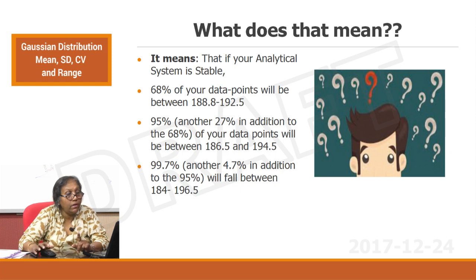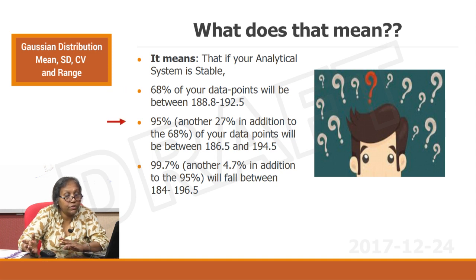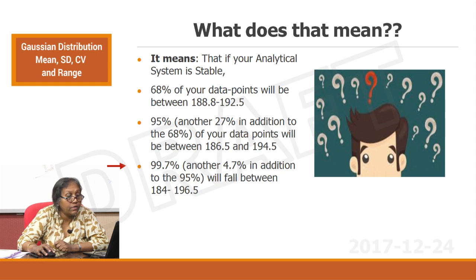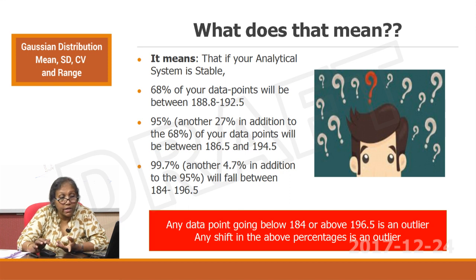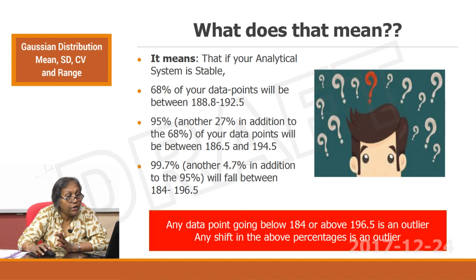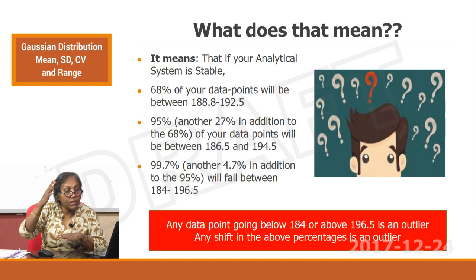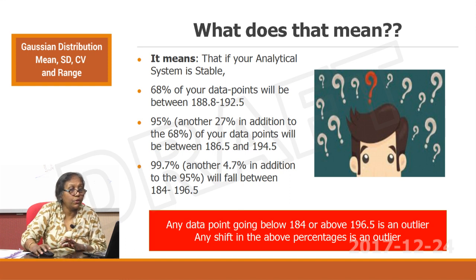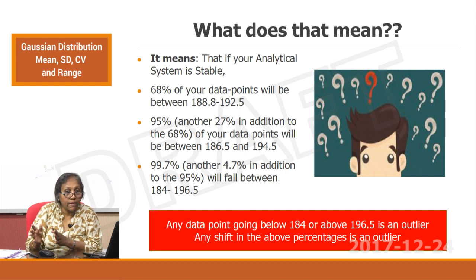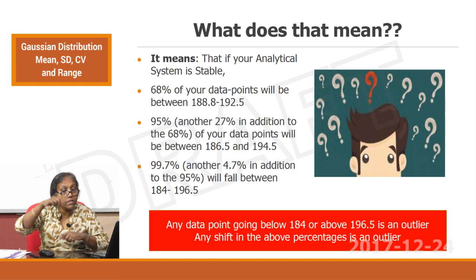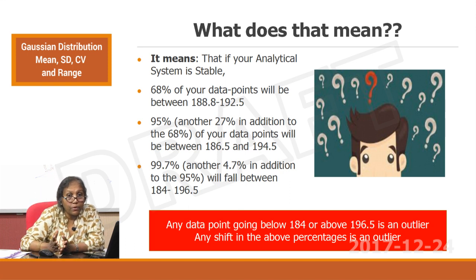If your analytical system is stable: 68% of data points will be between 188 and 192.5; 95% — another traditional 27% added — between 186 and 194; and 99.7% will fall between 184 and 196. Any point going below 184 or above 196.5 is an outlier. Any shift in these percentages is also an outlier — if percentages are shifted showing 68% clustering to one side, that means bias is building up, indicating a systematic error. Any point beyond specified ranges also indicates a random error or the beginning of a systematic error.